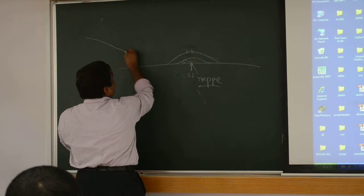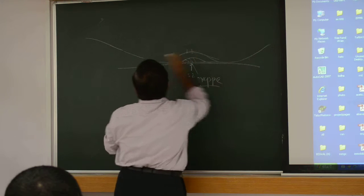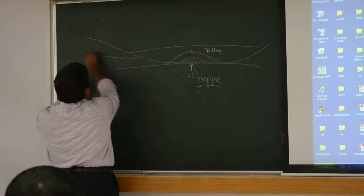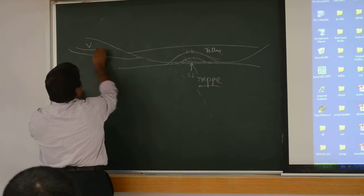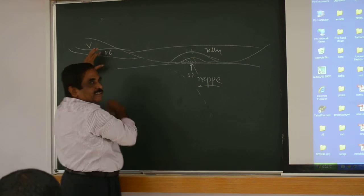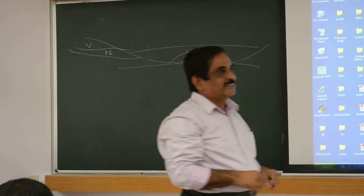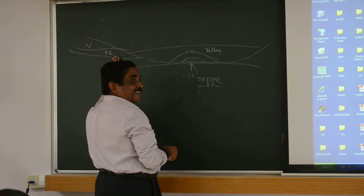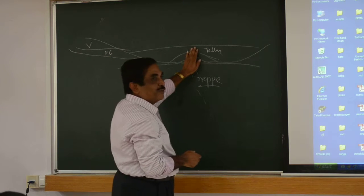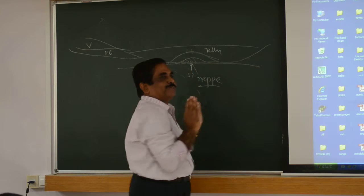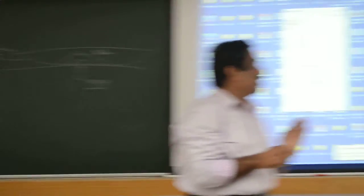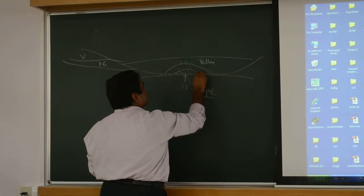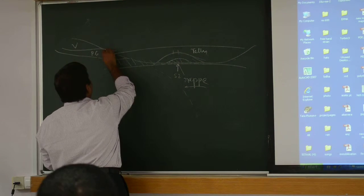Here is the basin, here is the suture. Then the sediments are here. The Vindhians are sitting here, then followed by the Peninsular gneiss. These are the crustal rocks. Now as you are pushing, gradually this part will be affected. You cannot grow Himalaya just with the material at the suture — thrusting was here, and gradually thrusting will go this way on both sides, spreading like this.